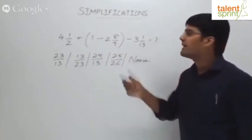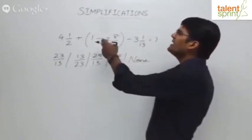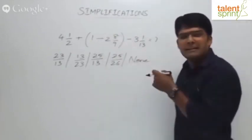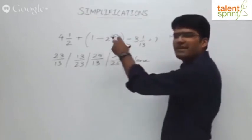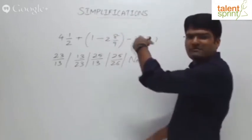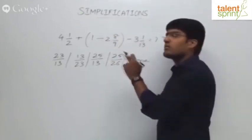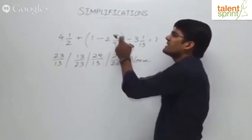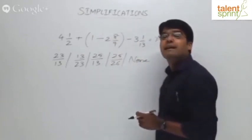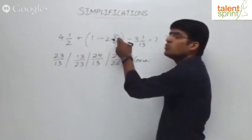Now simplify this part: 1 divided by 2 and 8/9. Let's simplify division. Division means you try to simplify this mixed fraction into an improper one. So 2 into 9 is 18, 18 plus 8 is 26, so 26/9. Yes or no? 1 divided by 2 and 8/9 can be taken as 26/9.